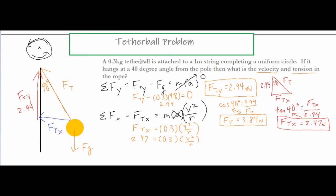I'm going to go back and look at my information. I have my mass. I have 1 meter for the string. This whole entire length of the string is 1 meter. That doesn't look like it's the radius, though. If it hangs at 40 degrees, what is the velocity and tension in the rope?